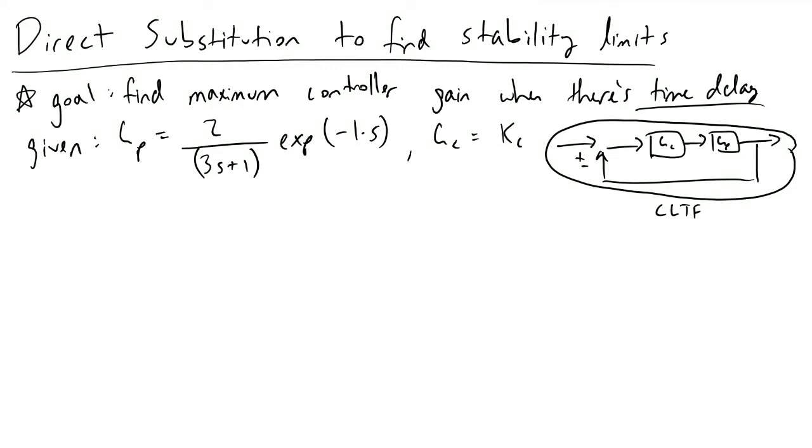Direct substitution is a method used by process control engineers when we want to determine the maximum controller gain we can use when our process has delays.